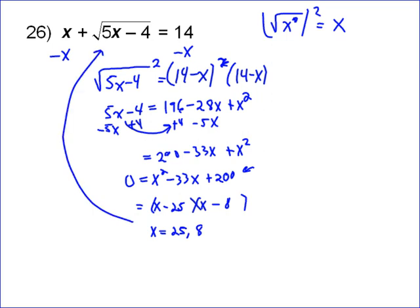However, whenever you do radicals, it's a good idea to check to make sure your answer is correct. So in this case, if we do 25, it's going to be 25 plus the square root of 5 times 25 is 125 minus 4 is 121 equals 14. Well, if you notice, 25 plus 11 does not equal 14. And so 25 did not work as an answer.